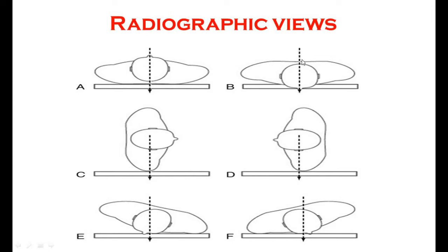When the subject faces opposite to the X-ray tube, X-rays are projected from the posterior aspect to the anterior aspect. This view is called the posterior-anterior (PA) view.